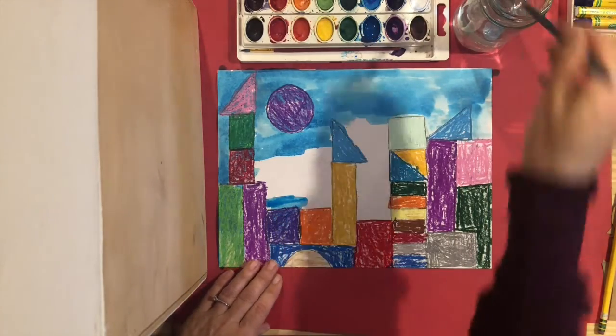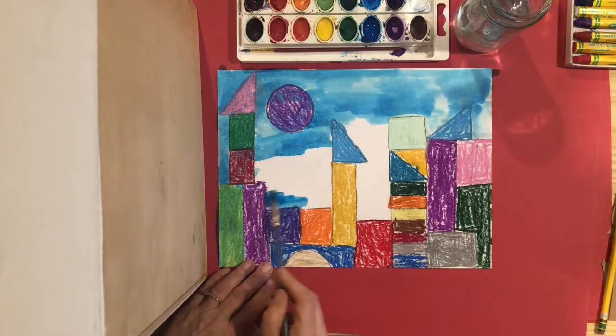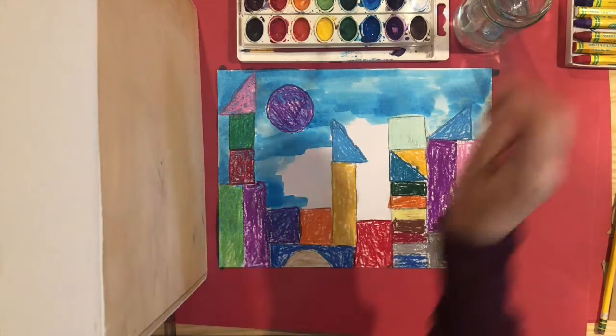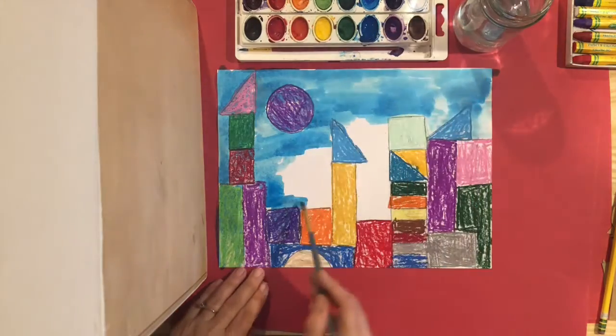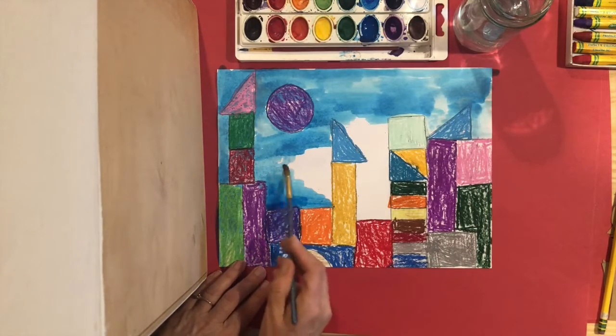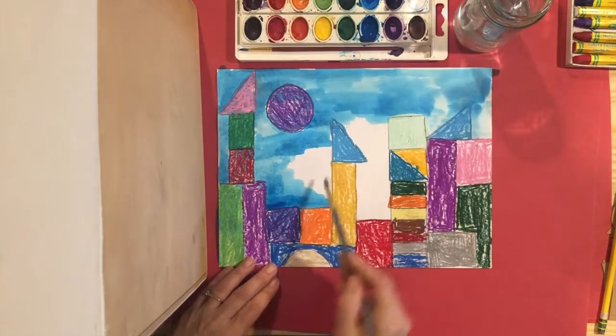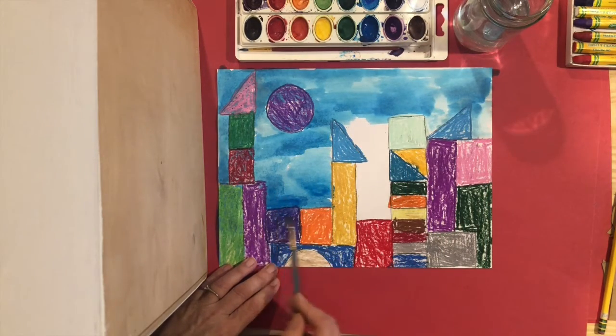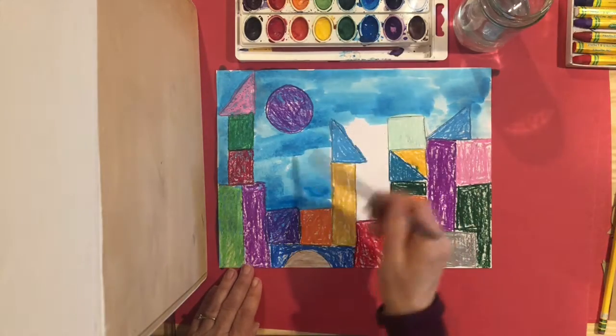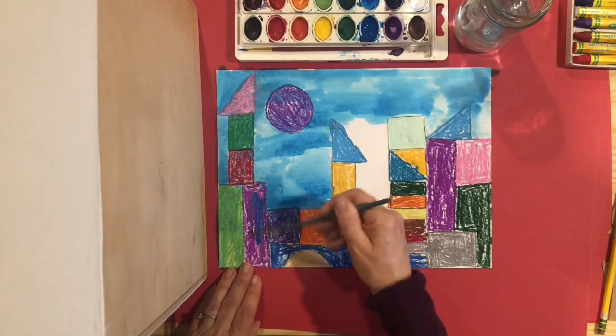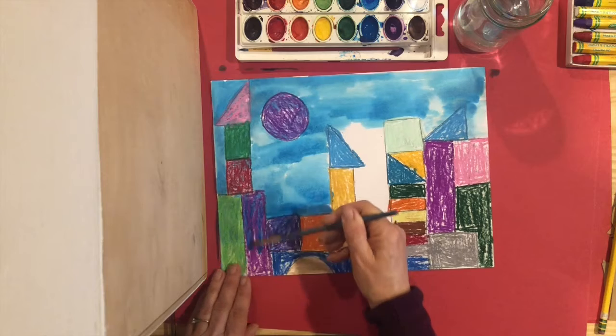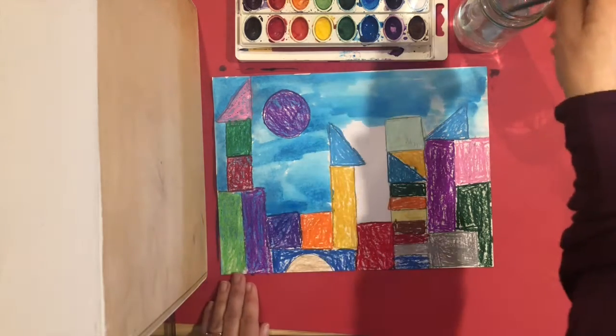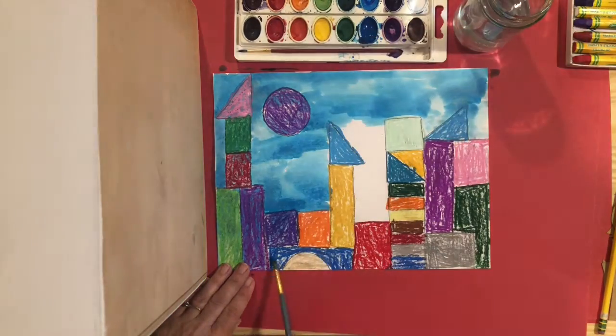You can even take a little tissue or a paper towel and just wipe up some of the paint if it gets too watery. But you just want to keep spreading it over, so even when I go on top, I like the way it's filled in those spaces that we didn't color earlier.